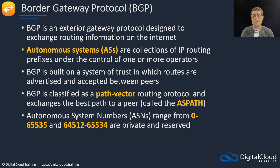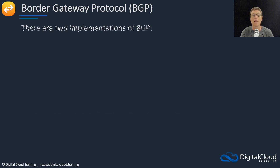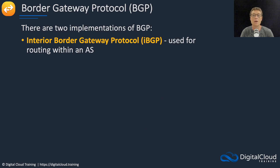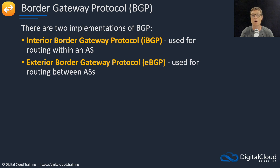Autonomous system numbers, or ASNs, range from 0 to 65535, and 64512 to 65534 are private and reserved. All autonomous systems have their own ASN. There are two implementations of BGP: the Interior Border Gateway Protocol, iBGP, used for routing within an autonomous system, and the Exterior Border Gateway Protocol, eBGP, used for routing between autonomous systems.